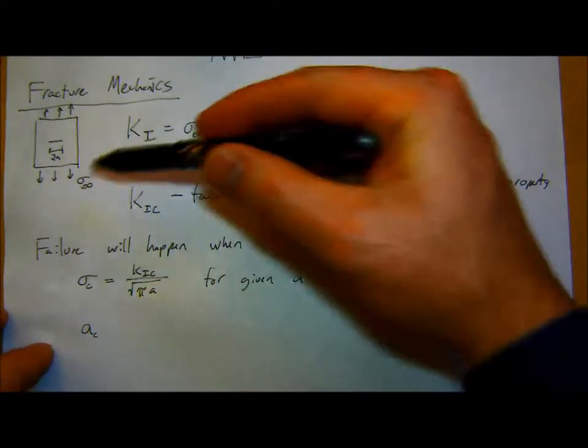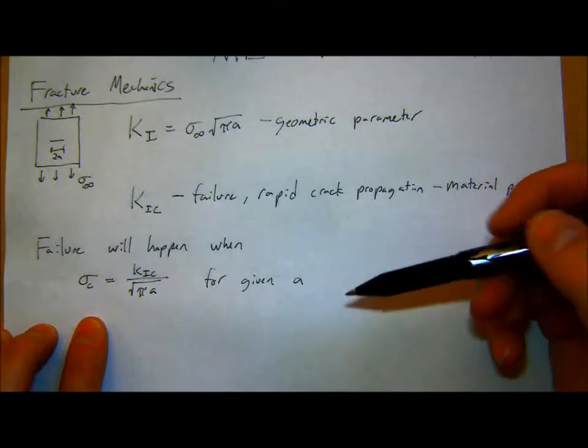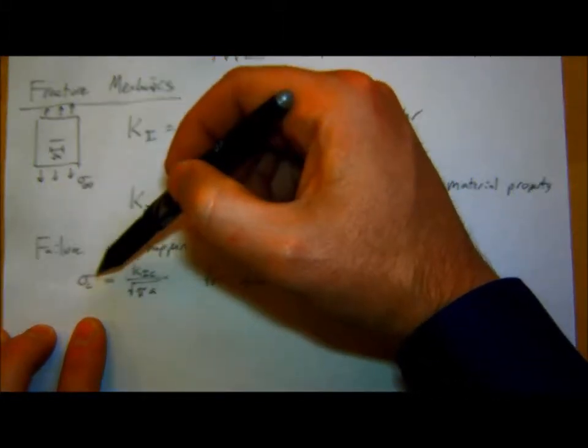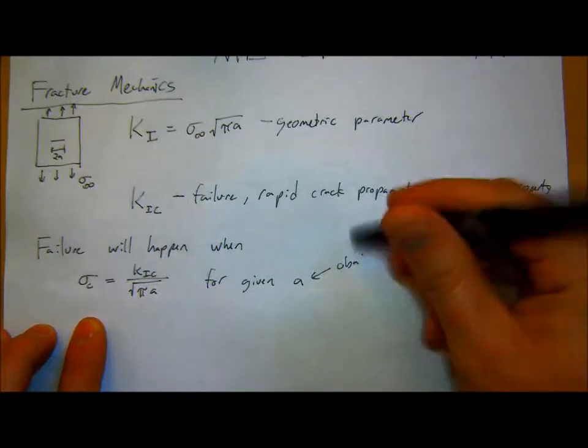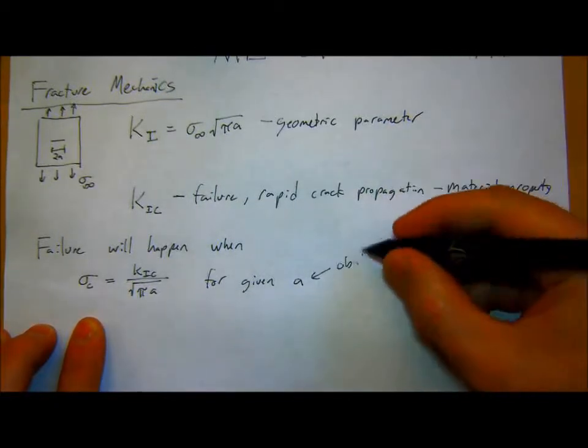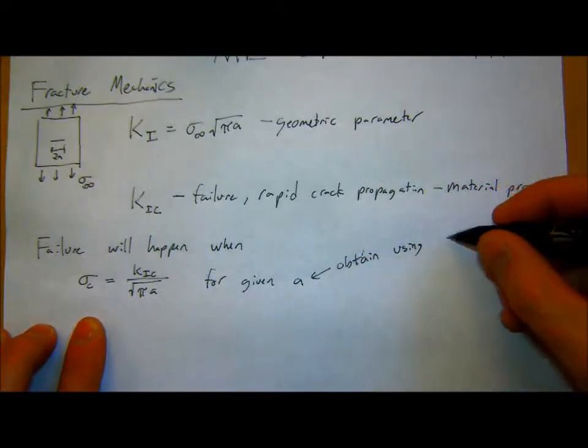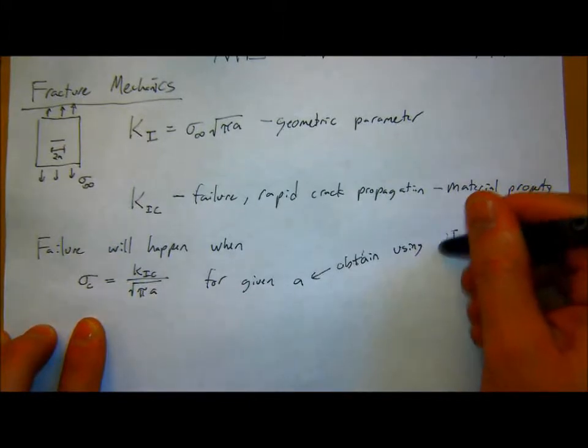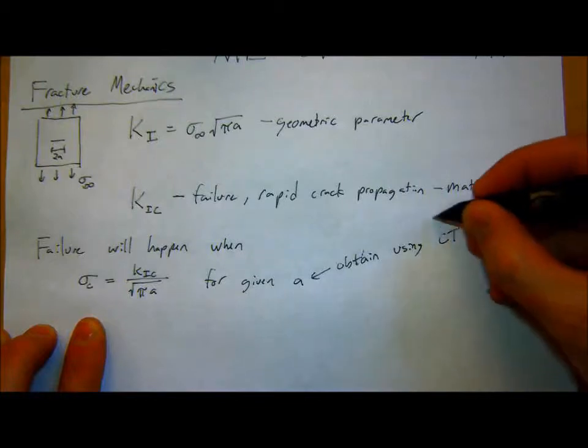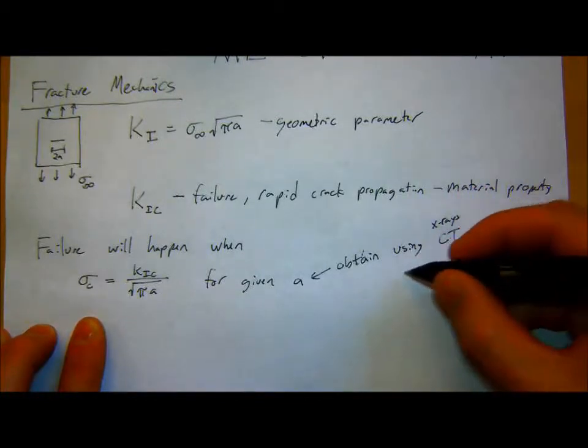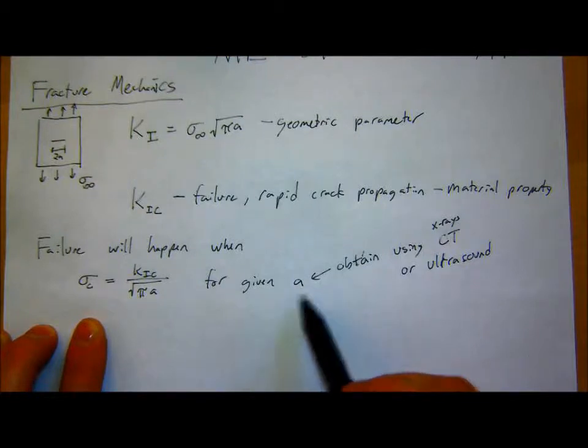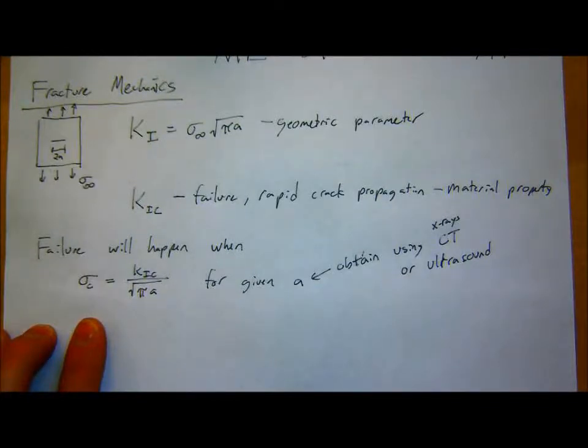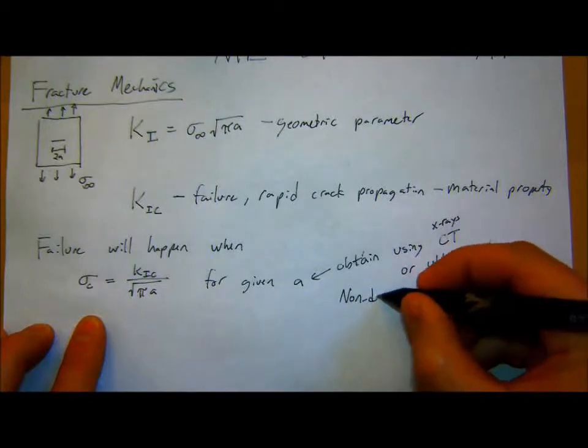K1C over square root of pi A, for given A. Or, this is now, if I know how big my biggest crack in the material is, if I know what my A is, I know how much stress I can apply to my thing before it fails. So, to get this A, you can obtain it using something like DIC, or not DIC, sorry, CT scans. So, computed tomography, using CT with X-rays, or something like ultrasound. And basically, this determination of the maximum crack size in the material is, when you hear the term, non-destructive evaluation.